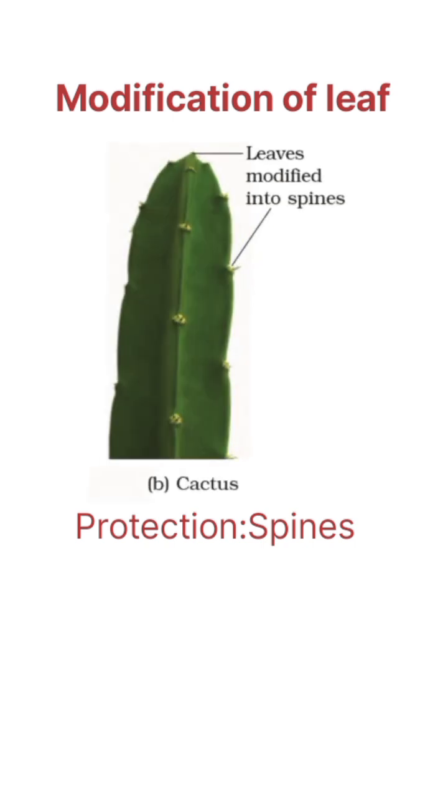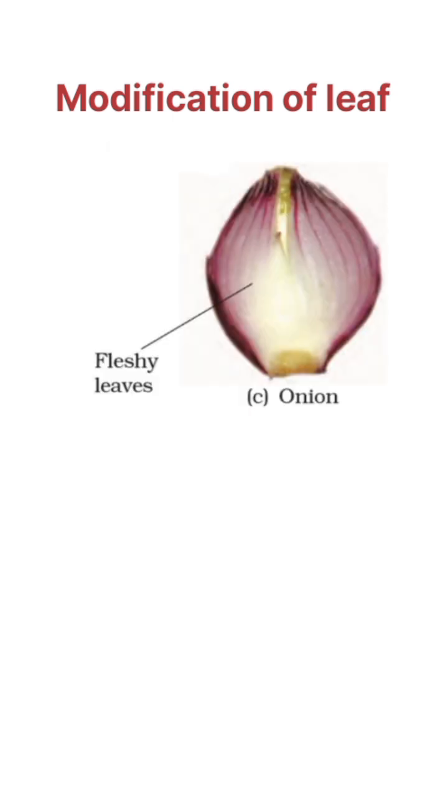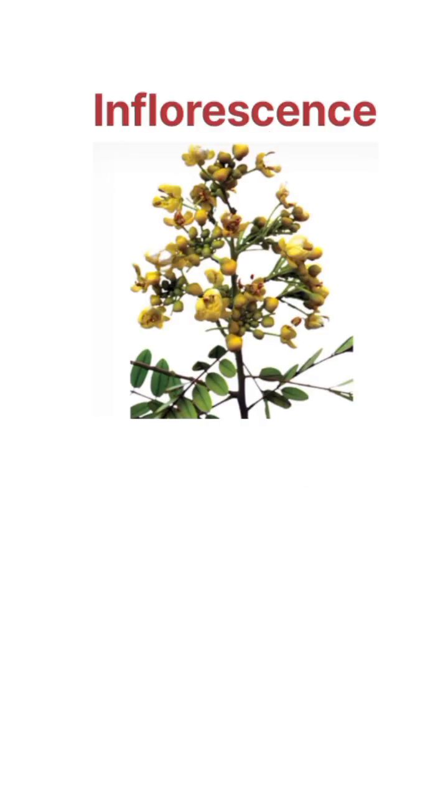16. Protection — spines, Cactus. 16. Storage: 17. Fleshy leaves. 17. Onions.